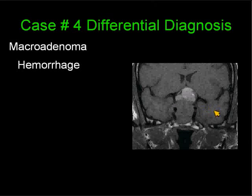You can also have hemorrhage — in this case a macroadenoma that has bled superiorly, with the hemorrhage compressing the optic chiasm. If you have compression of the optic chiasm, multiple cranial nerve findings, and headaches due to hydrocephalus, you have the so-called pituitary apoplexy syndrome. But you don't have to have apoplexy to have hemorrhage within the pituitary gland.